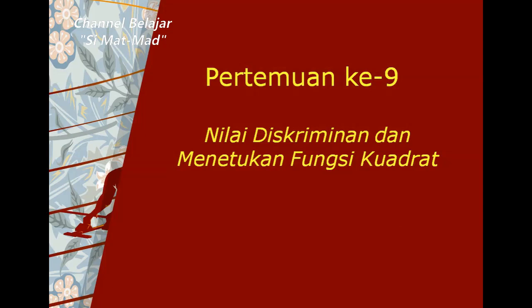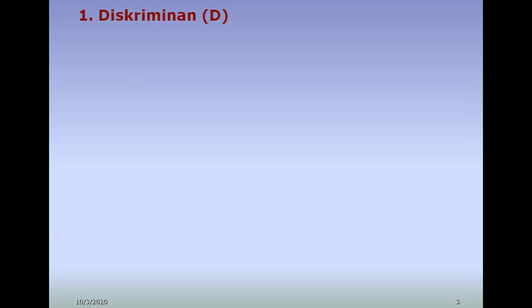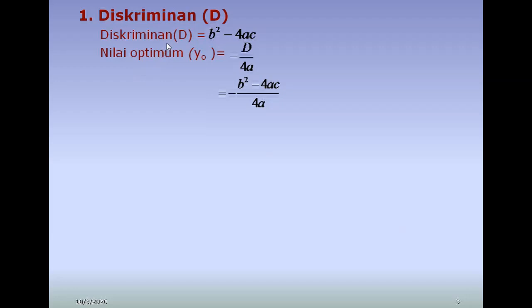Pada pertemuan ke-9, kita akan mempelajari nilai diskriminan dan cara menentukan fungsi kuadrat. Yang pertama, kita belajar cara menentukan diskriminan. Lambangnya adalah D kapital. Diskriminan atau D dapat dicari dengan menggunakan rumus B kuadrat min 4AC. Dari nilai diskriminan, kita bisa menentukan nilai optimum atau UU, dengan rumus min D per 4A. D-nya kita ganti B kuadrat min 4AC, sehingga menjadi rumusnya min B kuadrat min 4AC per 4A.